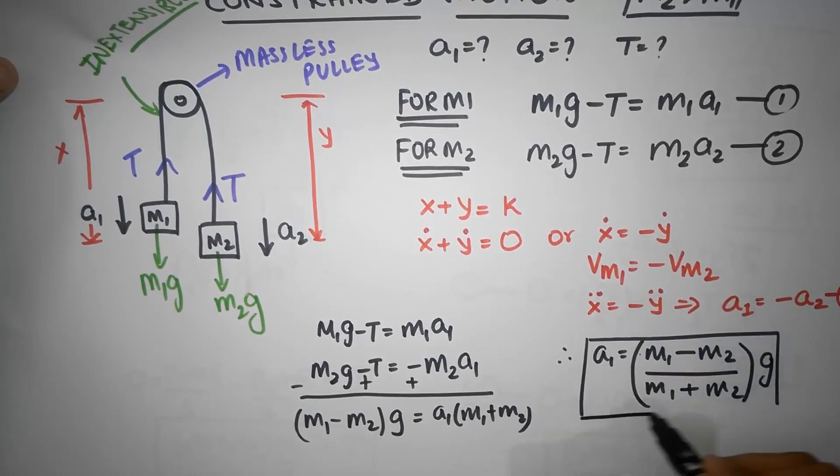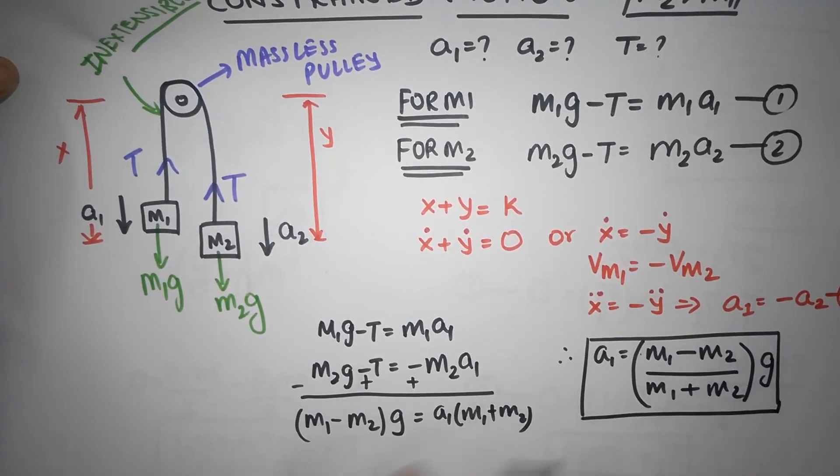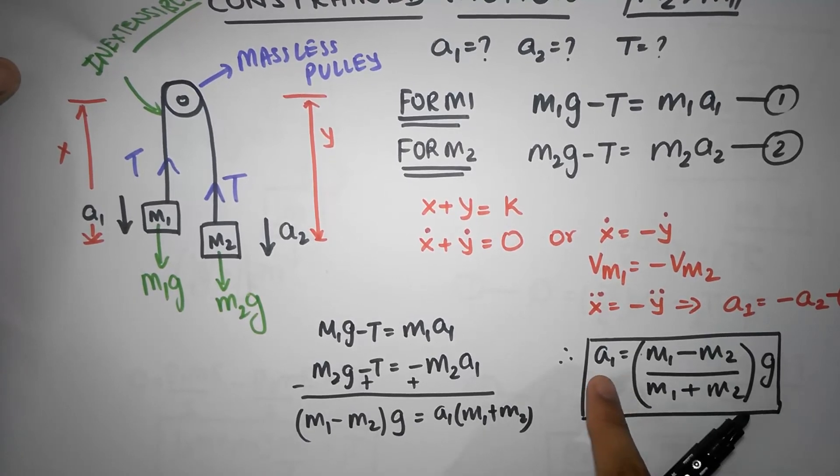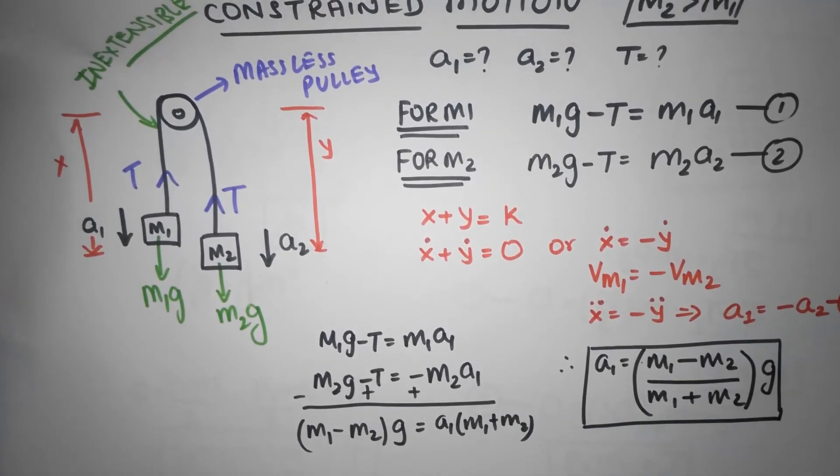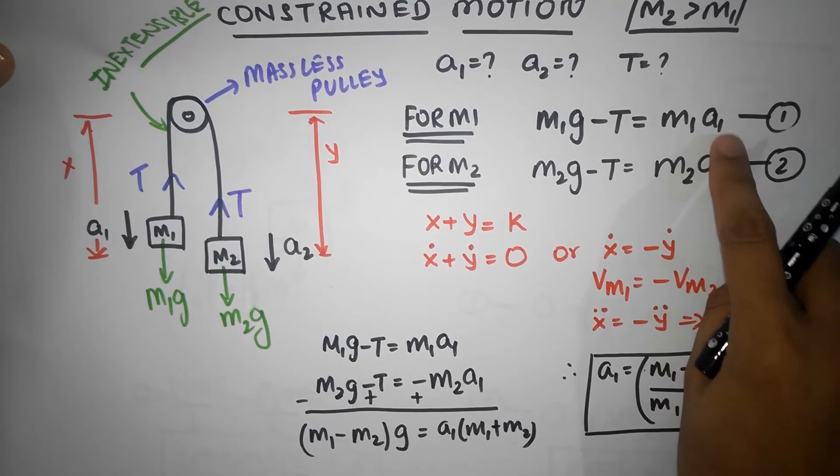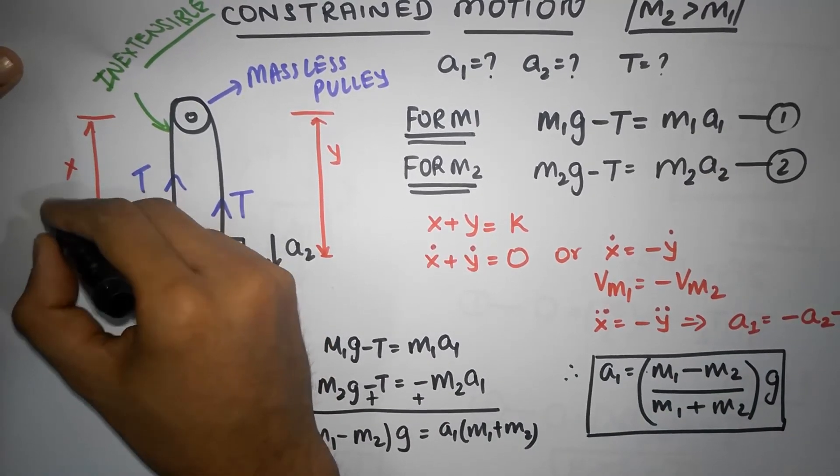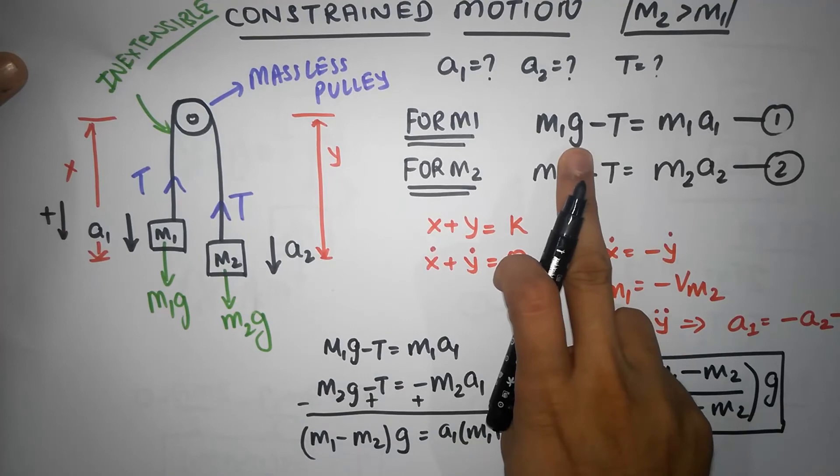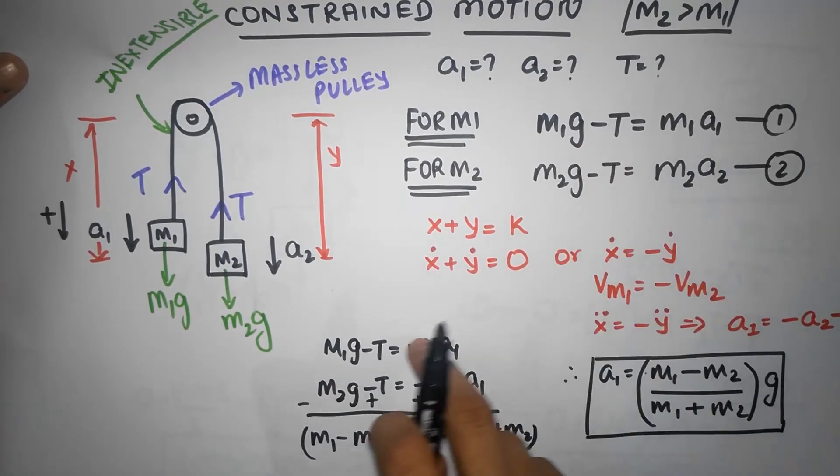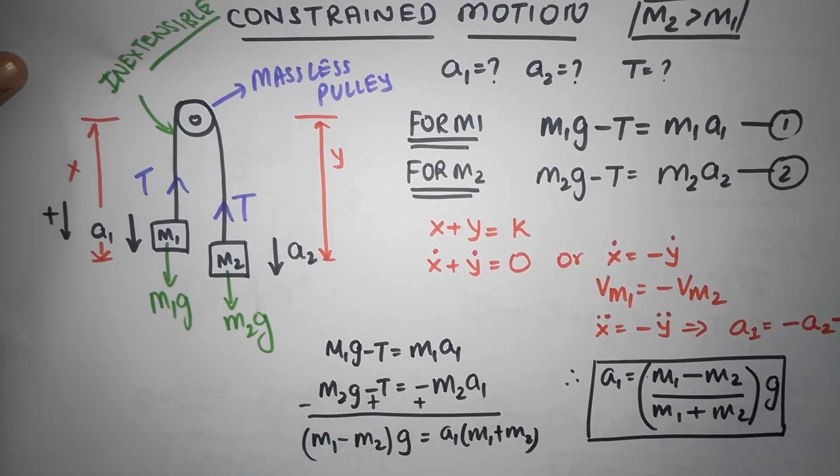There's our acceleration, there's our acceleration A1. Notice that when I built these equations I took downwards as positive. You can pretty much see I took downwards as positive in both cases.